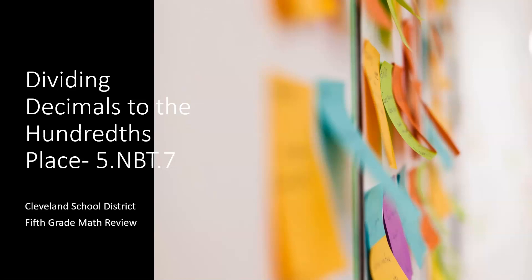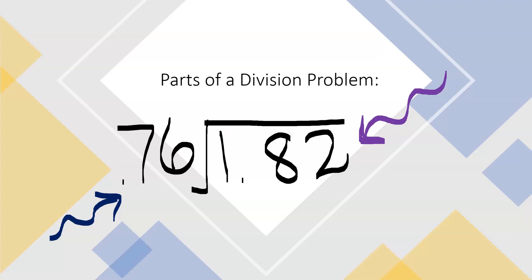Hey guys, it's your favorite math teacher, Miss Flint. Today we're going to divide decimals to the hundredths place — 5.NBT.7. We will focus on standard algorithm and models. Let's get started. Before we jump into dividing with standard algorithm, let's talk about some vocabulary we may need to know throughout the video.